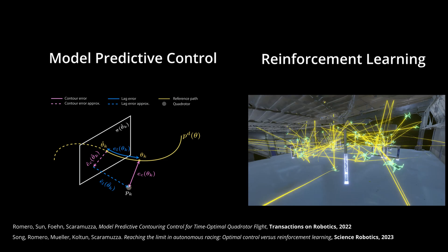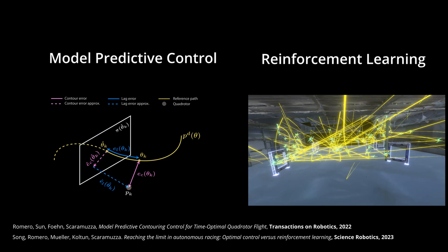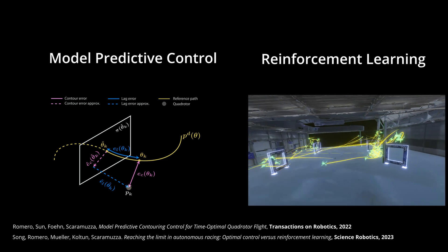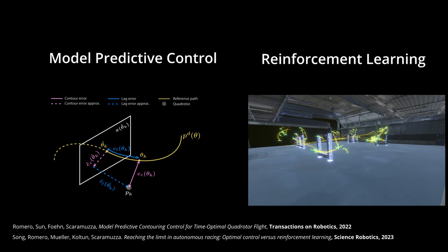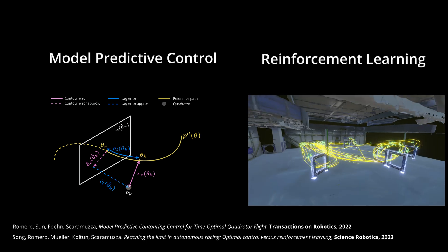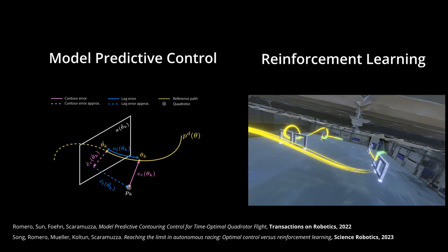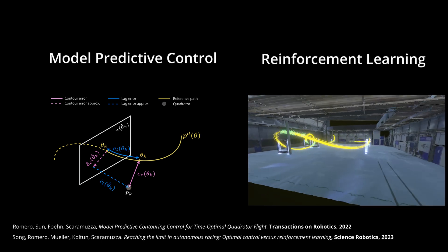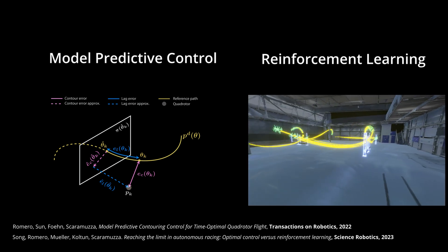Despite its success, model predictive control often requires intensive task-specific engineering and hand-tuning. On the other hand, reinforcement learning architectures require extensive data collection and lack interpretability and safety.